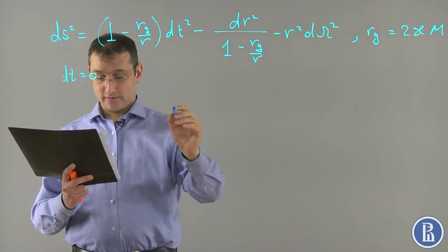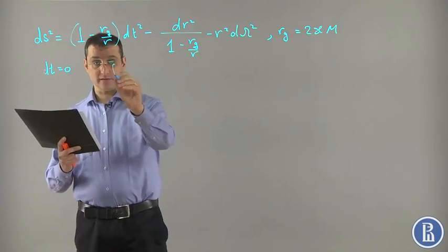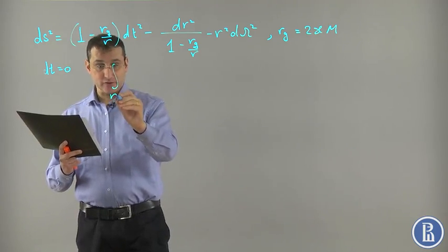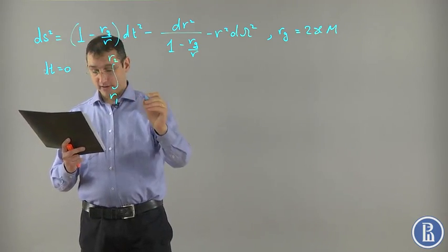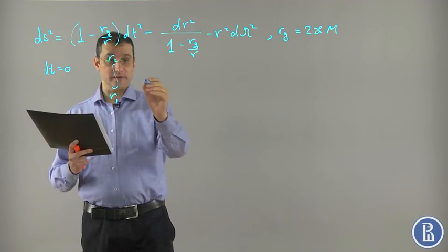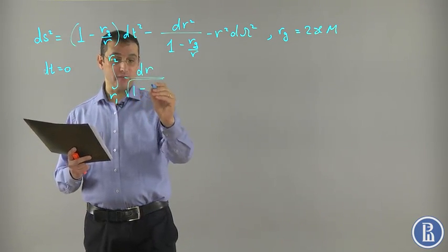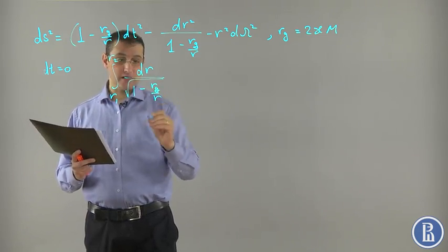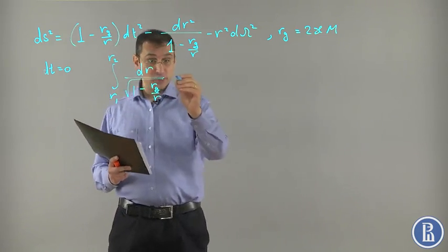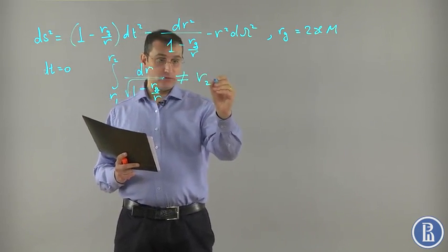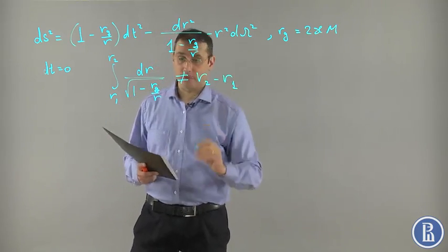The radii of the sphere, the distance between two points R1 and R2, is given by dr divided by square root of 1 minus Rg divided by R. And it is not equal to R2 minus R1.